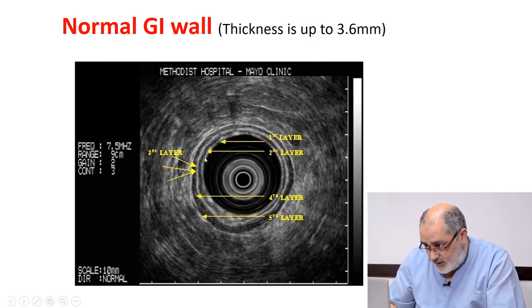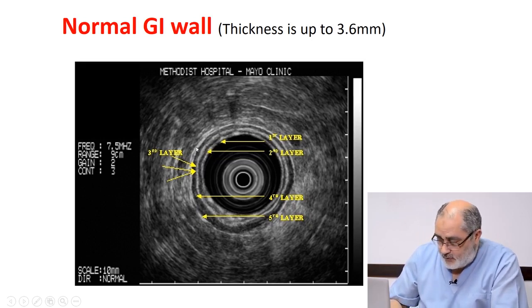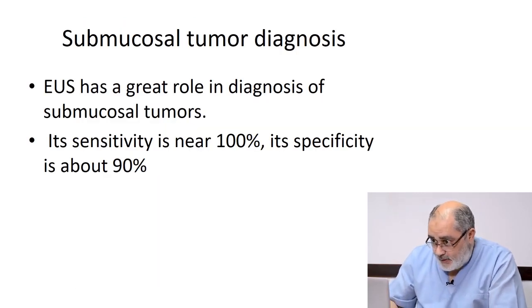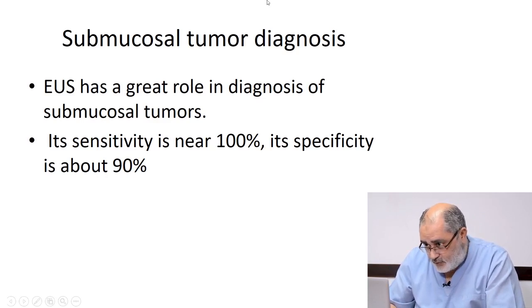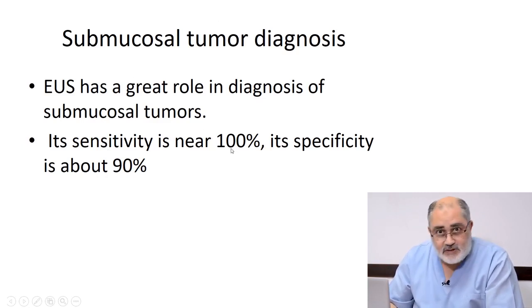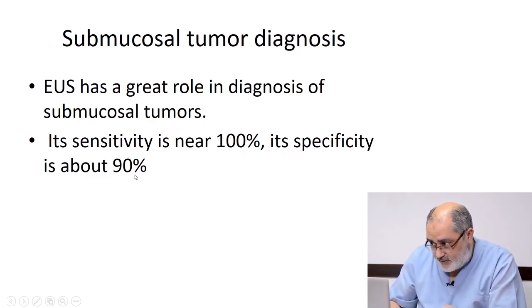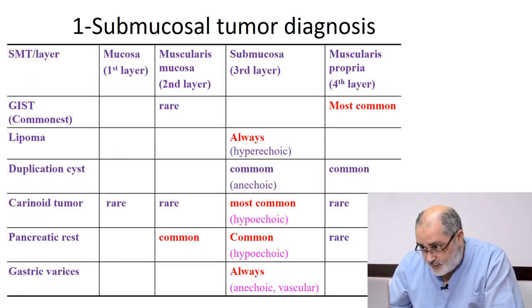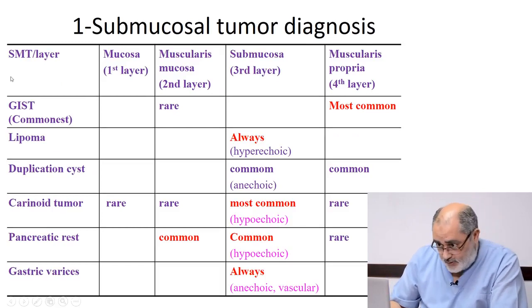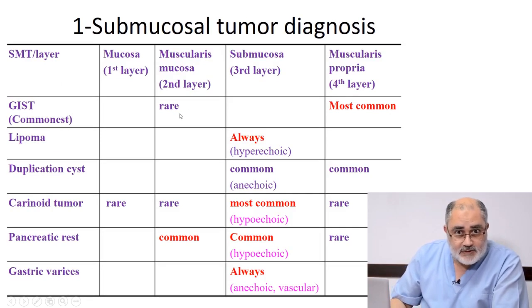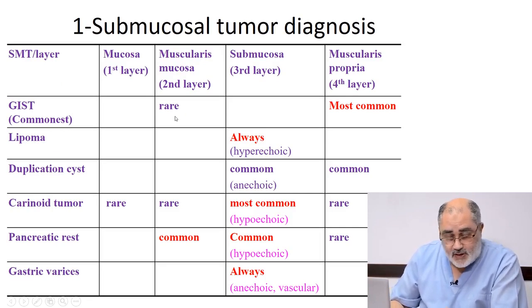Submucosal tumors — tumors arising deeper to the mucosa — may arise from the muscularis mucosa (second layer), submucosa (third layer), muscularis propria (fourth layer), or the adventitia/serosa (fifth layer). EUS is very accurate in diagnosis: sensitivity is 100%, so it usually does not miss any submucosal tumor. Specificity is high, about 90%, can specifically diagnose the type. Two important diagnostic points are the layer of origin and the echogenicity — whether hypoechoic or hyperechoic.